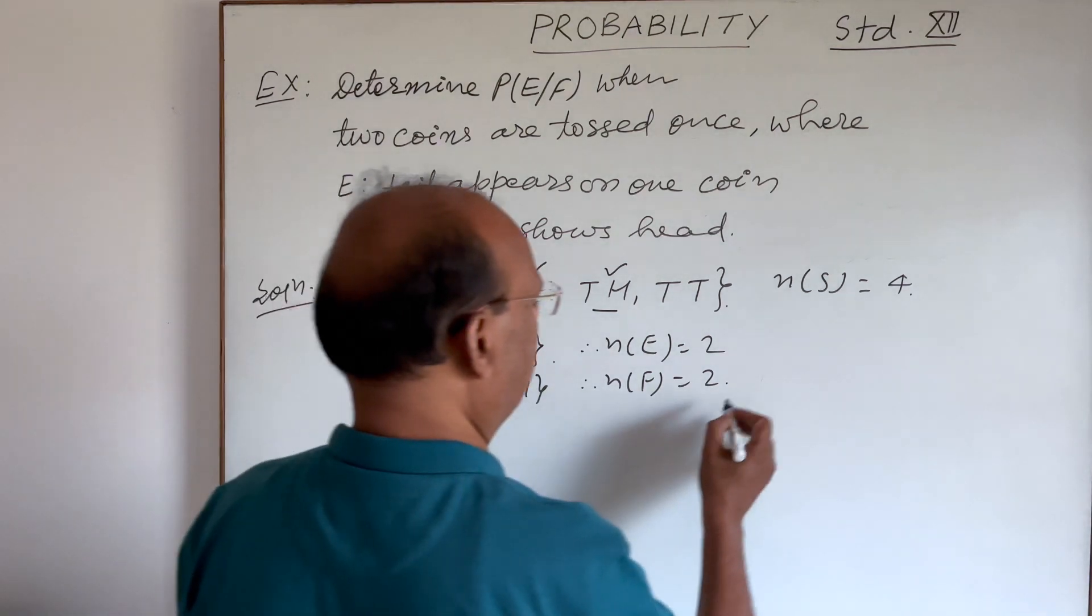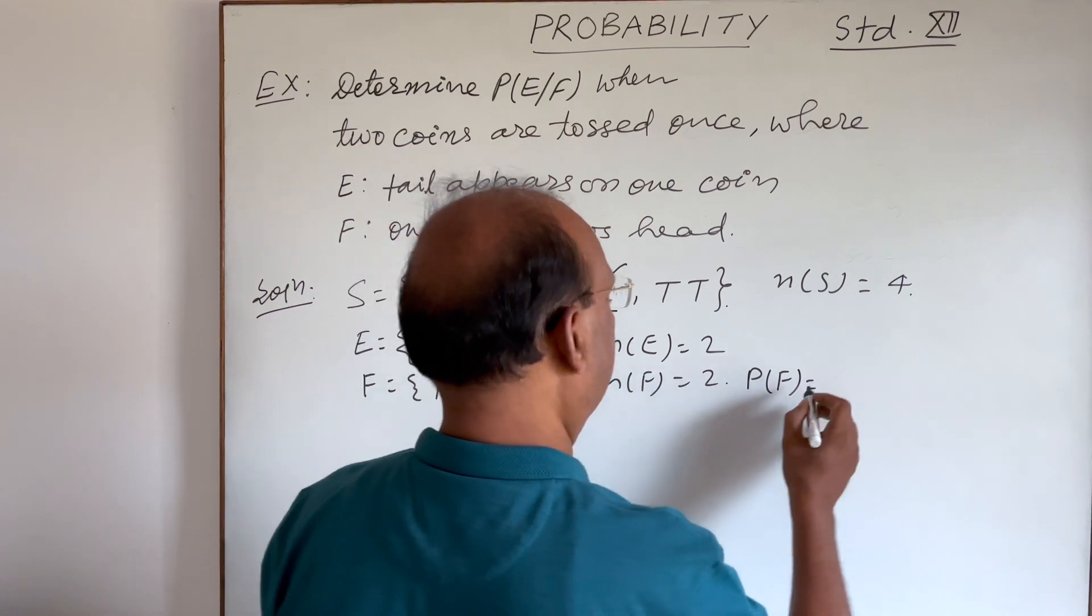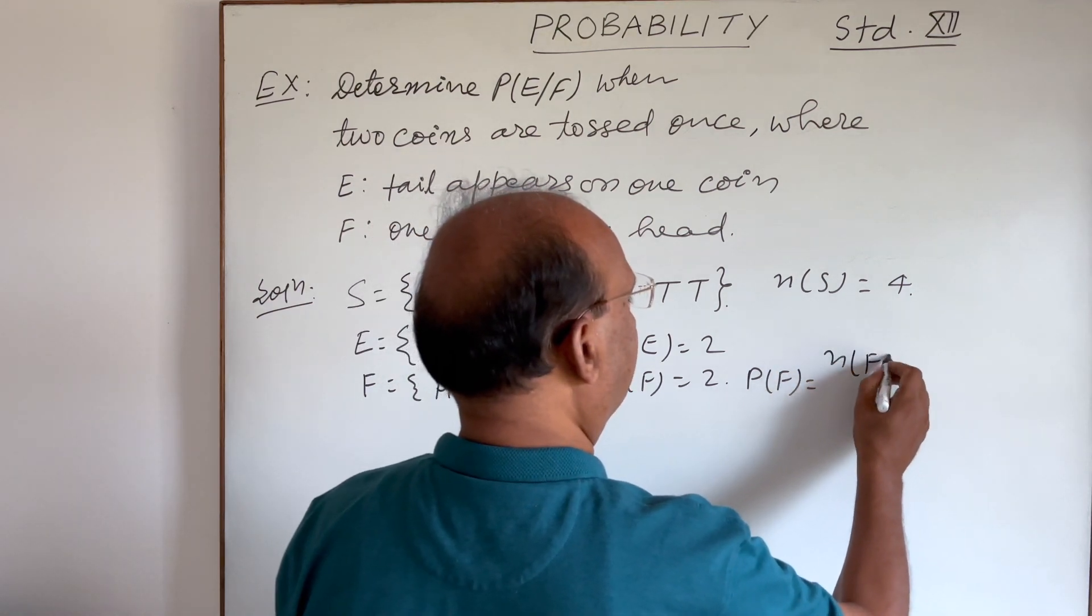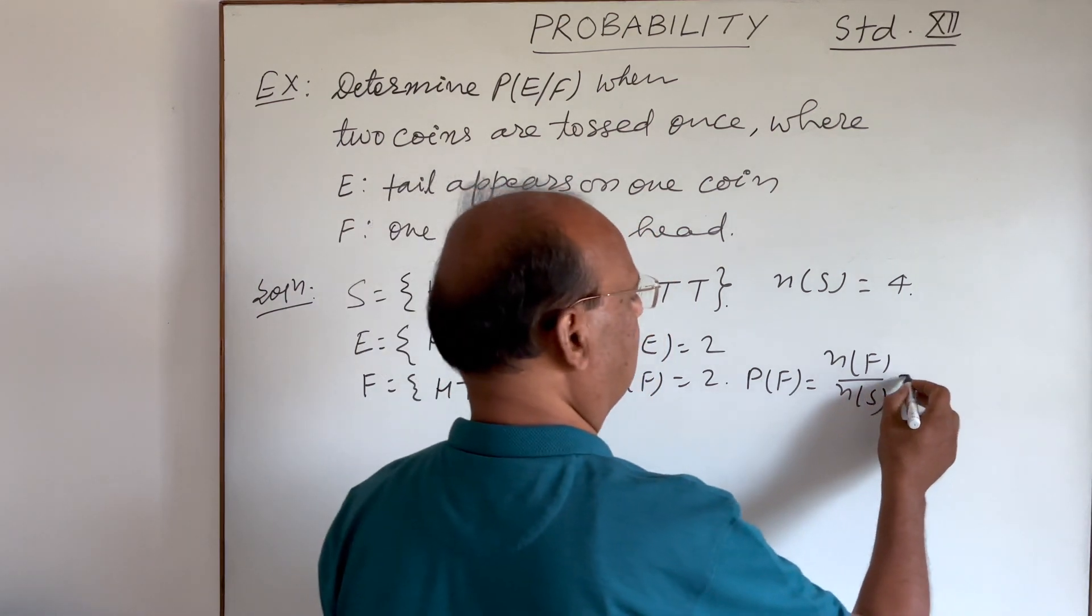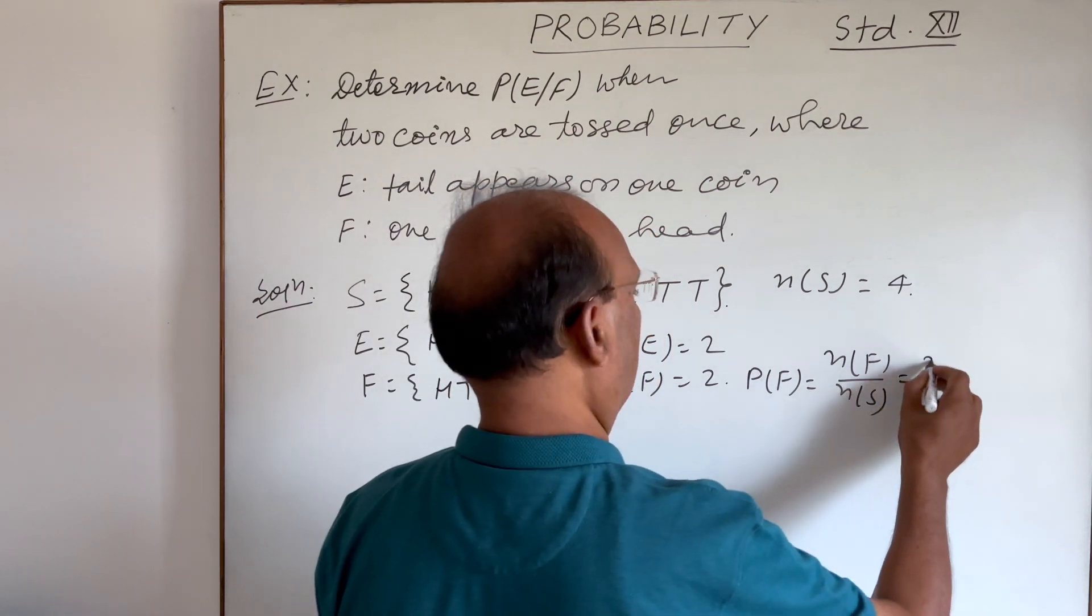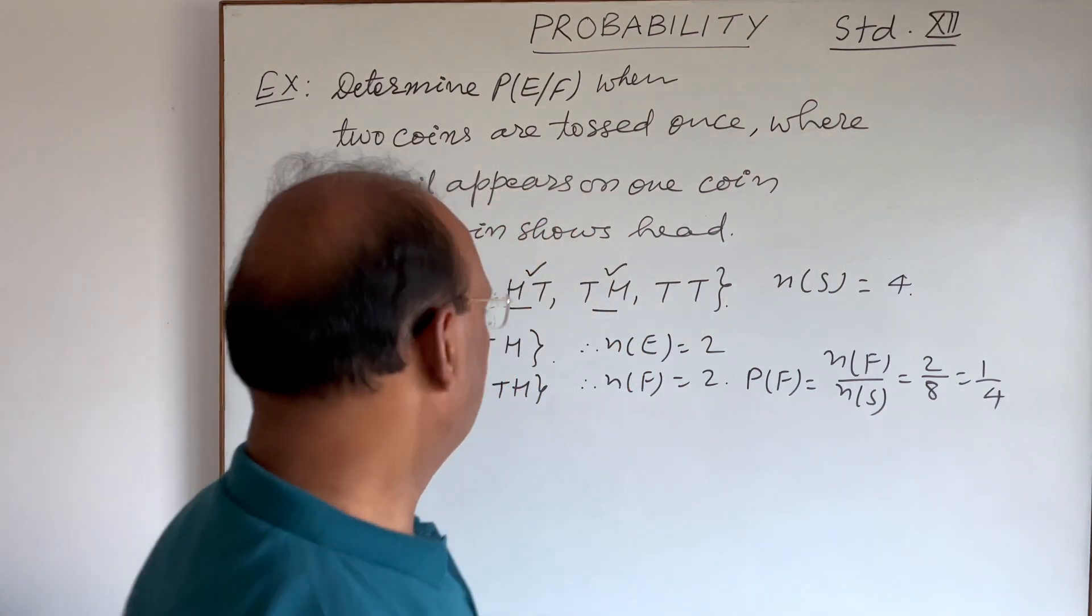Fine. So what will be the value of probability of F? Probability of F will be n(F) divided by n(S). And this is equal to 2 by 8. This is equal to 1 by 4.